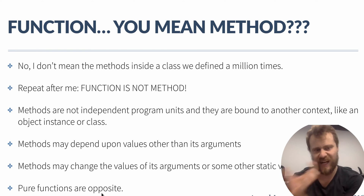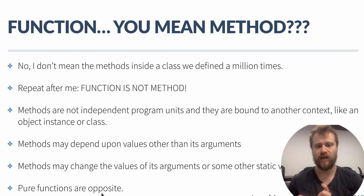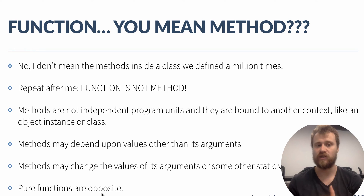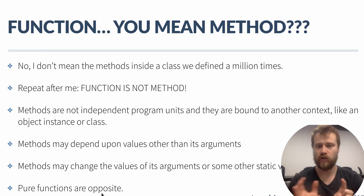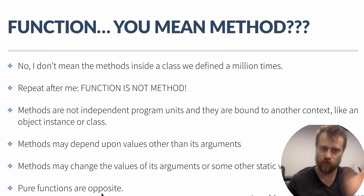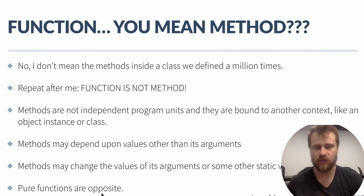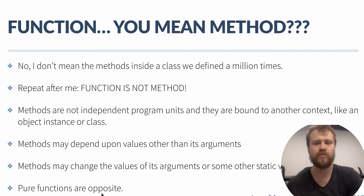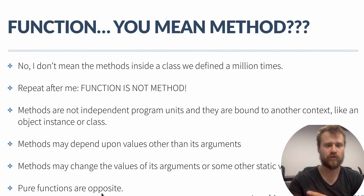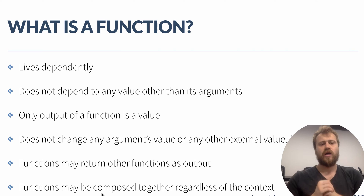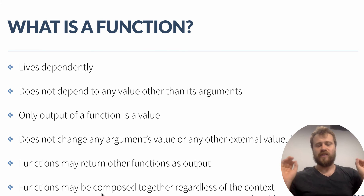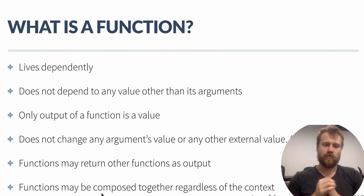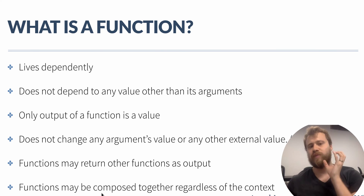This is called a side effect in functional programming, and it is not a desired behavior. Functions cannot change the values of their arguments or external values. They may only use these arguments to construct a brand new object. So to summarize: a function lives independently.